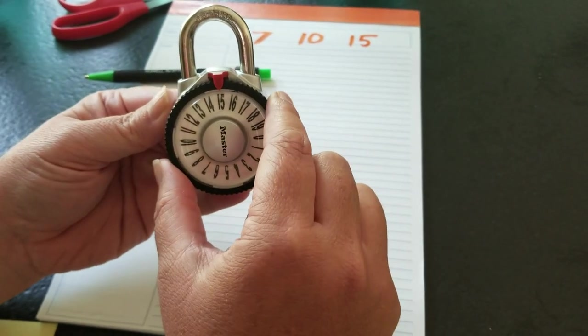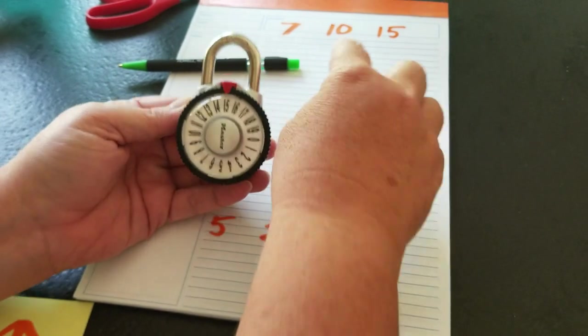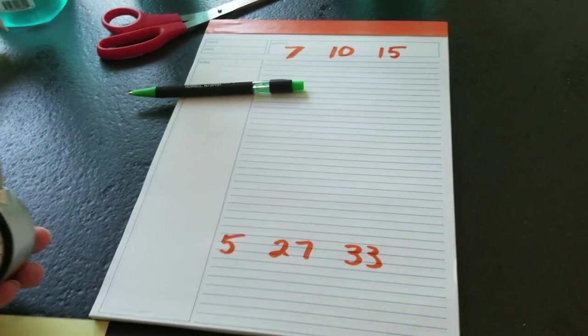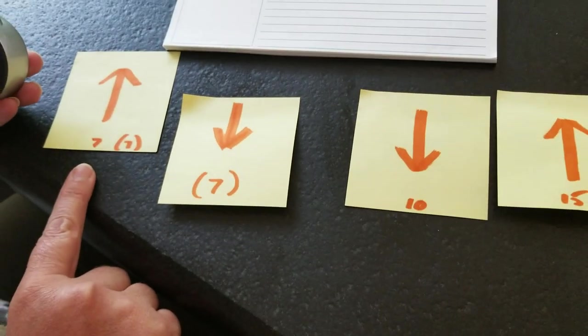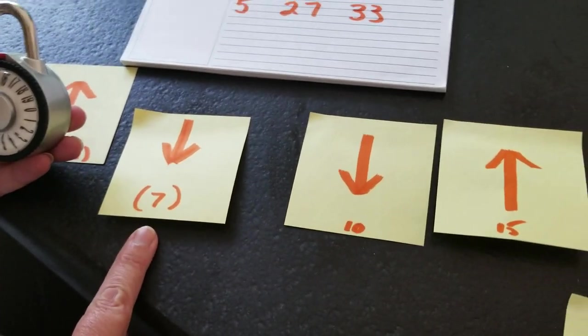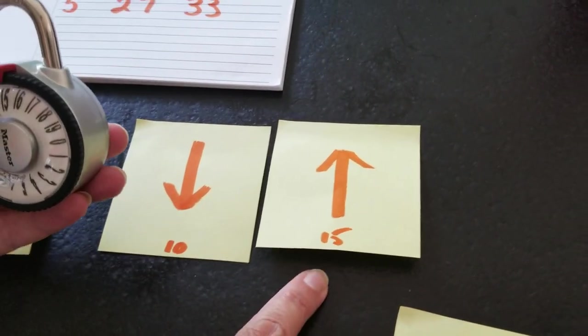You grab the lock, and your thumb is going to go up to the very first number. So if the combination on this lock is 7, 10, 15, we are going to write arrows like this. The first one you're going to go up to 7, you are going to go down past 7, continue going down to 10, and then finally back up to 15.